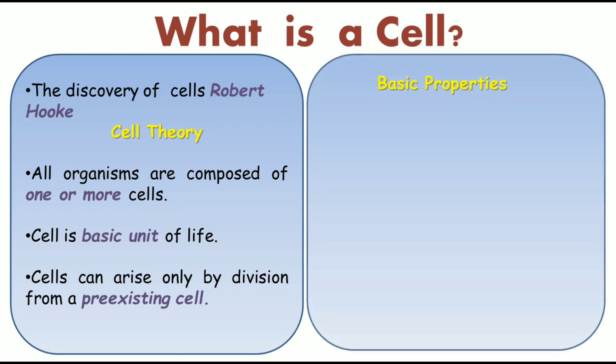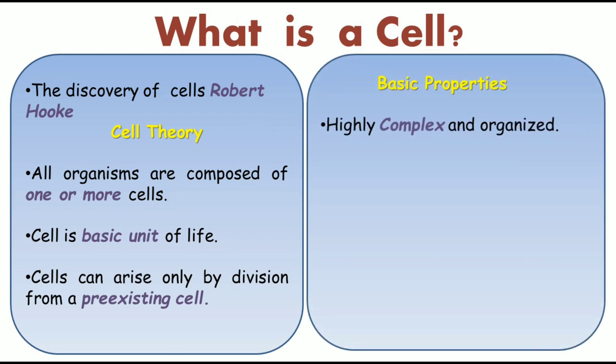The basic properties of a cell: first, cells are highly complex and organized. A cell contains cellular material like cytoplasm, different organelles, nucleus, and chromosomes. Everything makes the cell very complex and very organized, because inside a small cell, so much is ongoing.